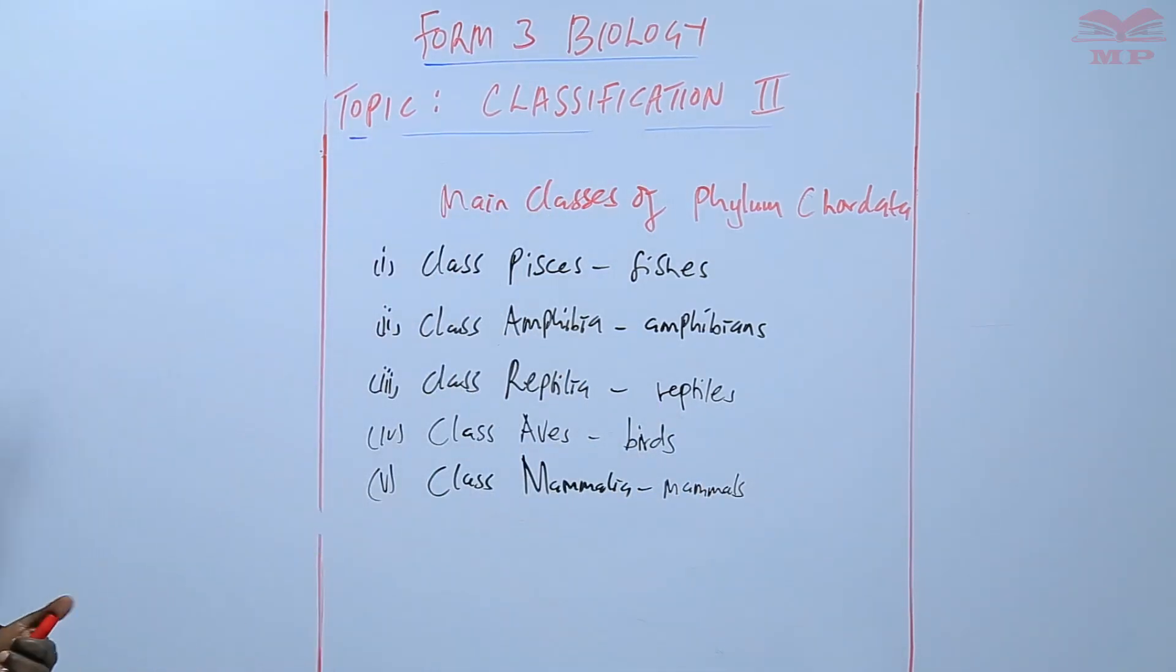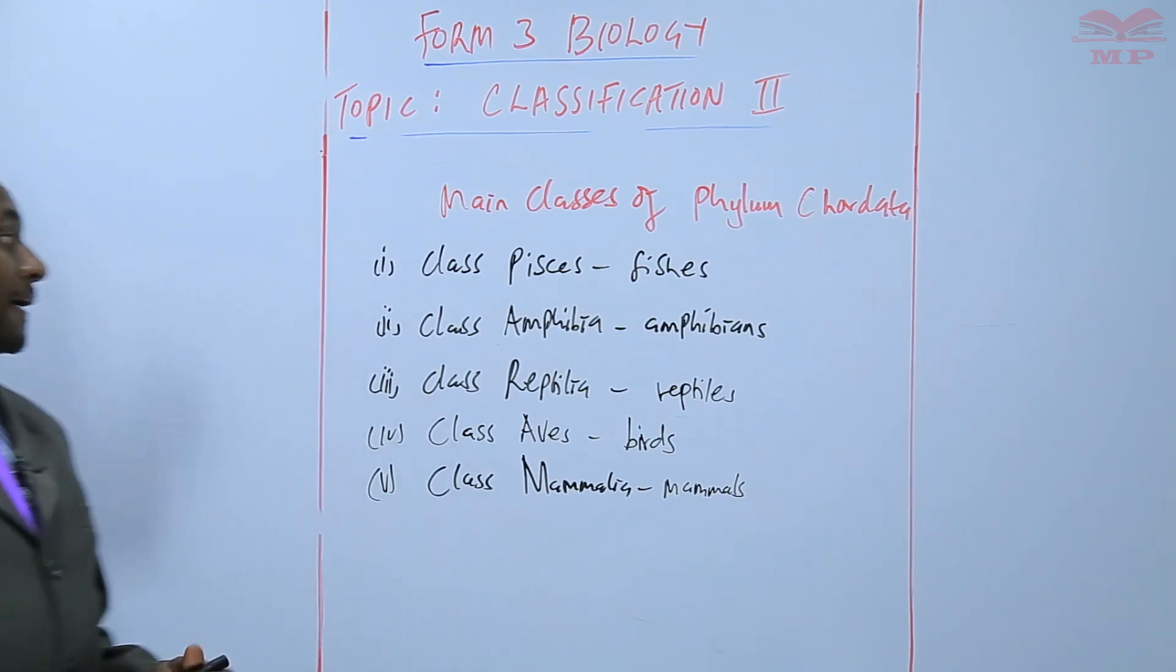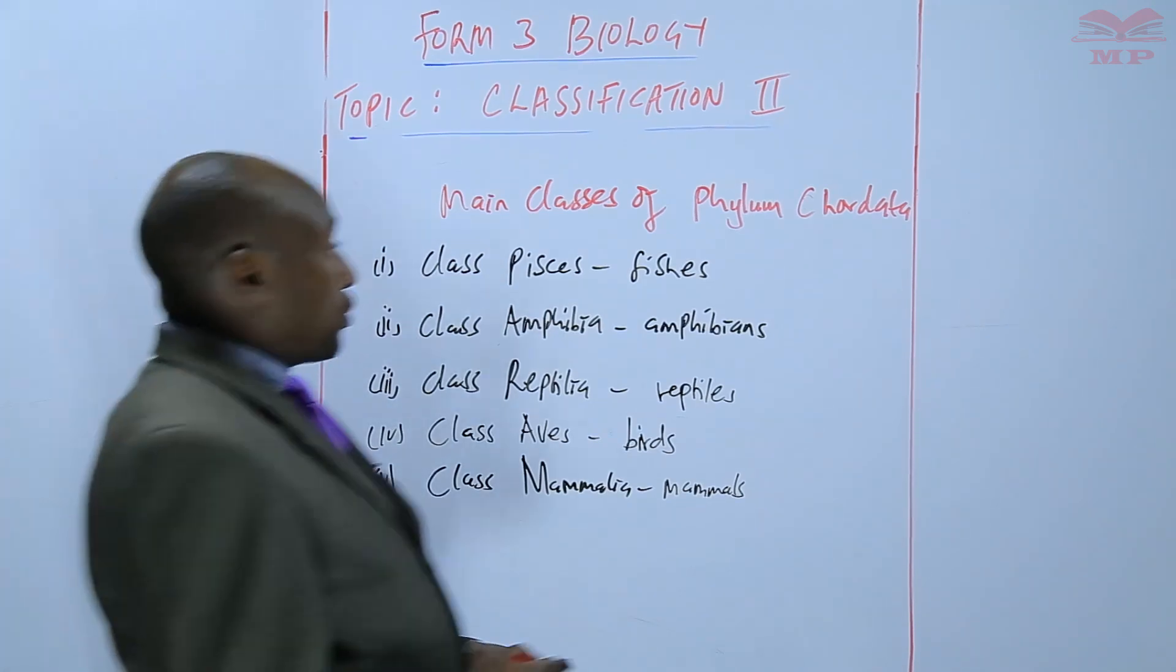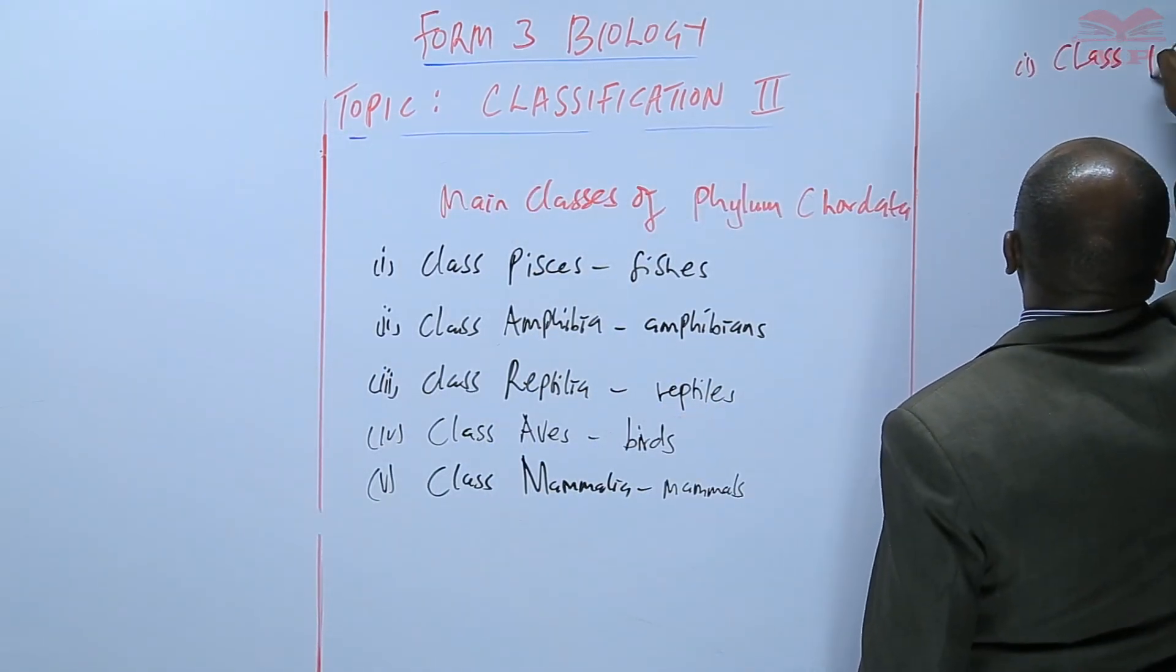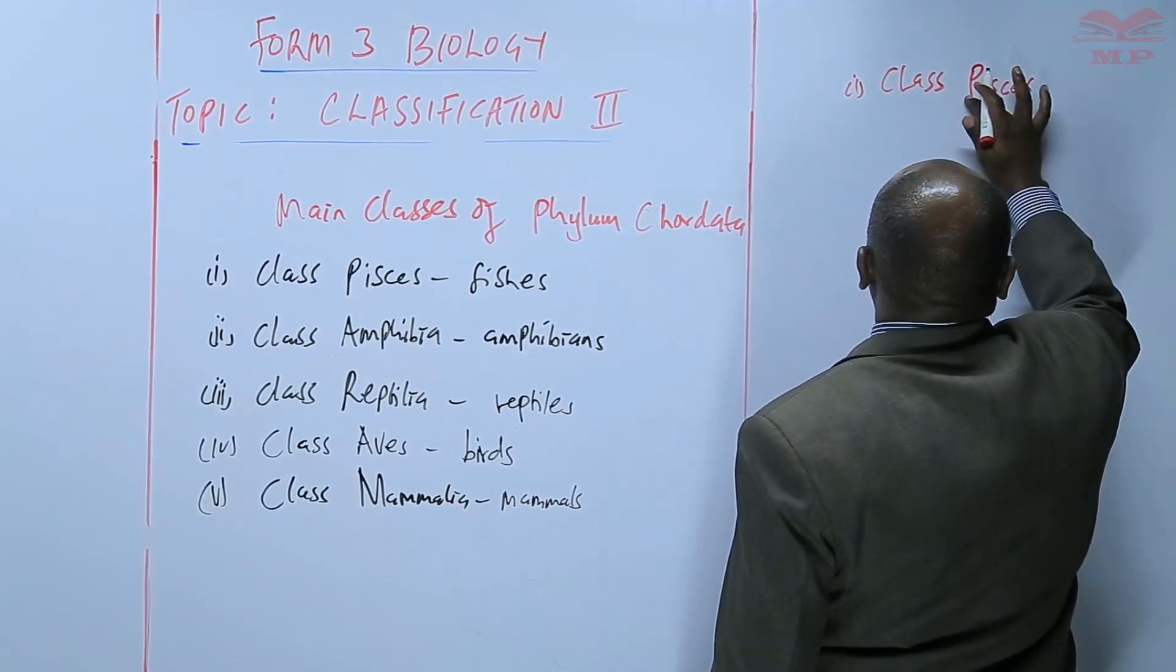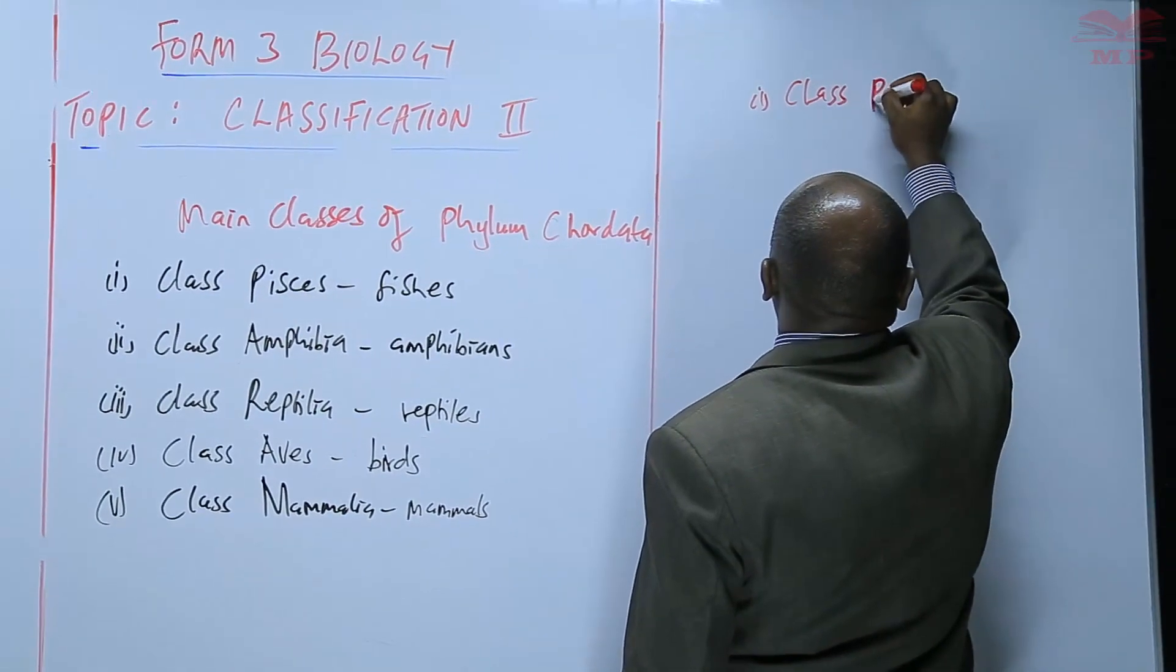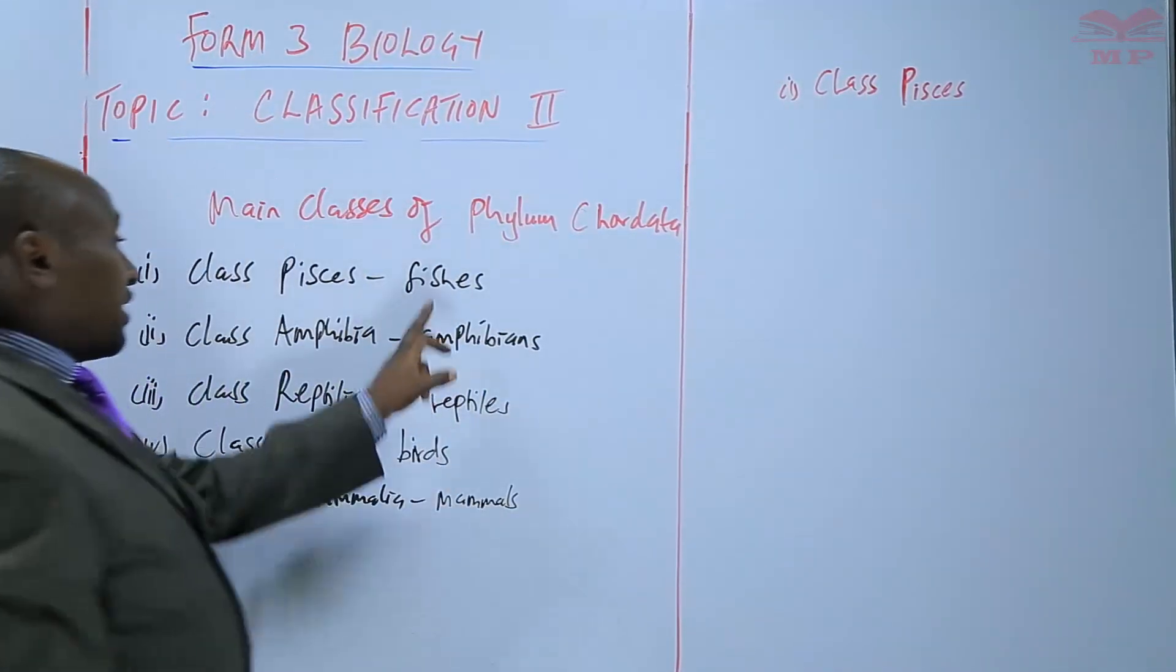Those are the five classes of Phylum Chordata that we shall be discussing. We will start with the first class, and this is class Pisces. Here we have all the types of fishes.